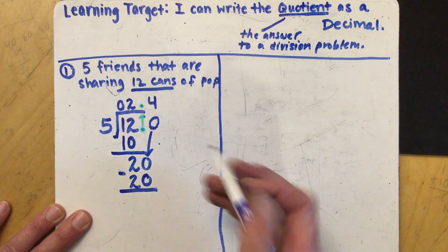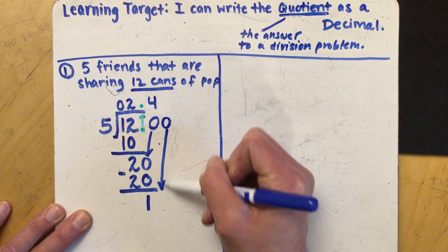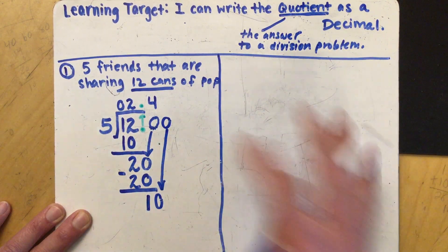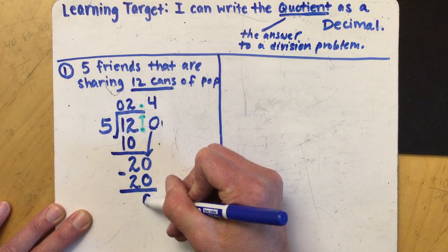If you would have had a remainder still you would have brought down another zero and then kept on going until you could get rid of any remainder.